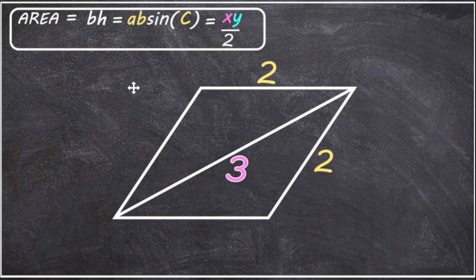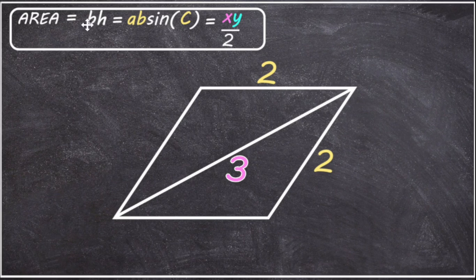Now each of these approaches have a problem. When we try to use base times height, we only have the base. Since opposite sides of a parallelogram are equal, the base length must be 2, but we don't have a height so we can't use the base times height formula.